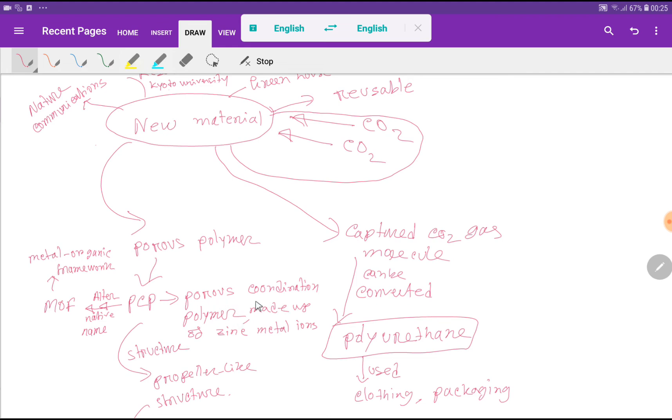And this PCP or Porous Coordination Polymer is made up of zinc metal ions. Due to this metal ion, this PCP or this new material can selectively capture carbon dioxide molecule. Actually, carbon dioxide molecule is less reactive. As a result, it is difficult to capture, but this material has been successful to capture the carbon dioxide from air.